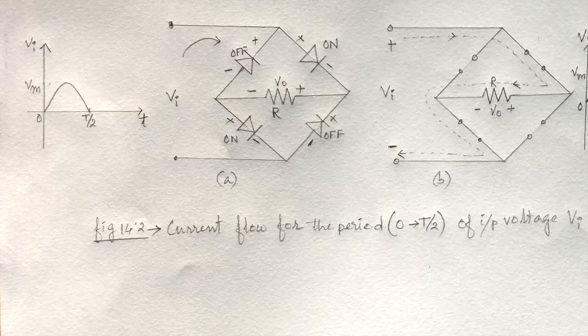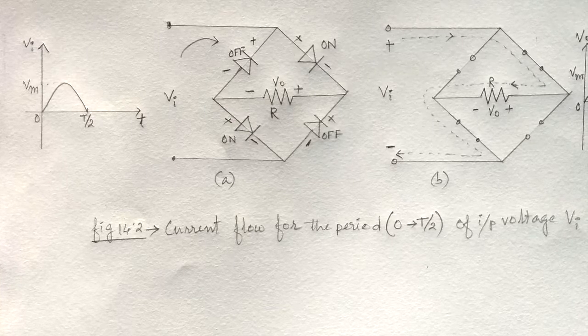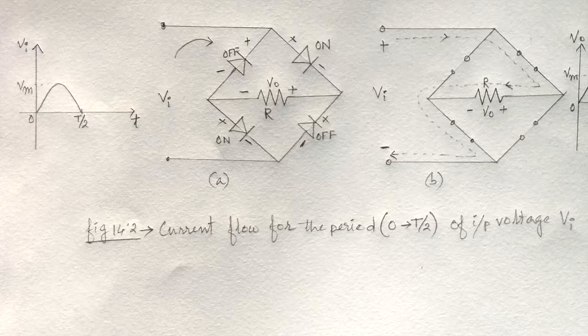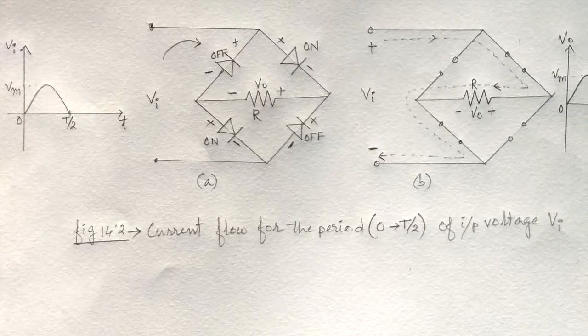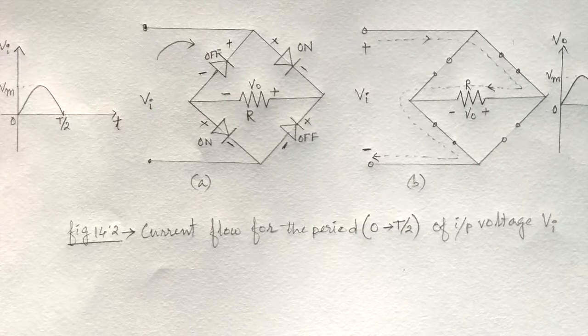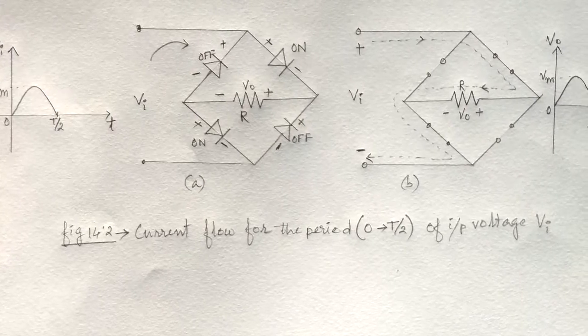For the positive half cycle, the polarity of the input signal is as shown in figure A. We can see that the diodes D2 and D3 are forward biased, and D1 and D4 are reverse biased, as shown in figure B.